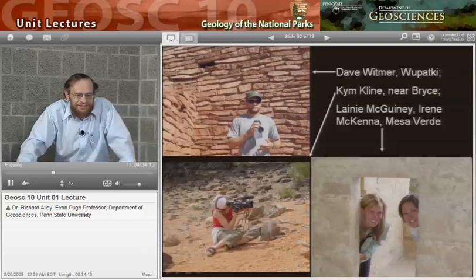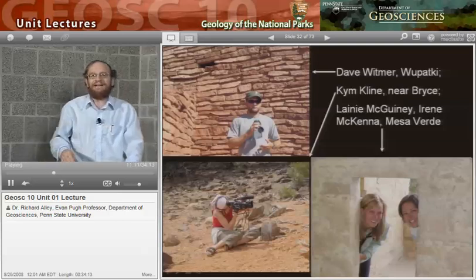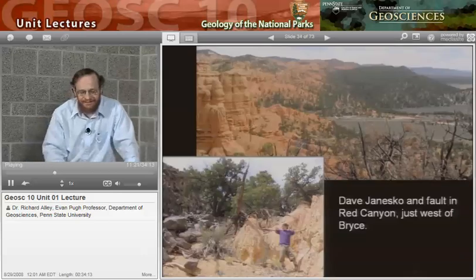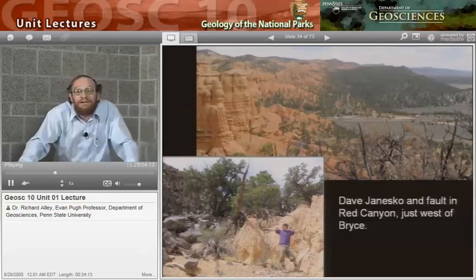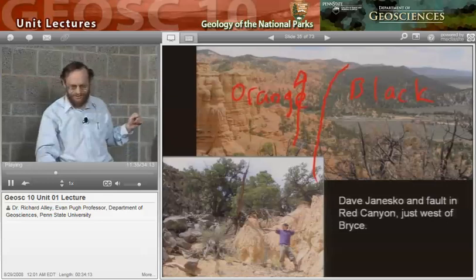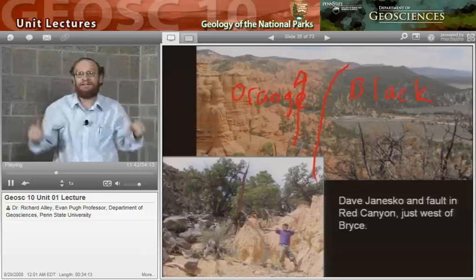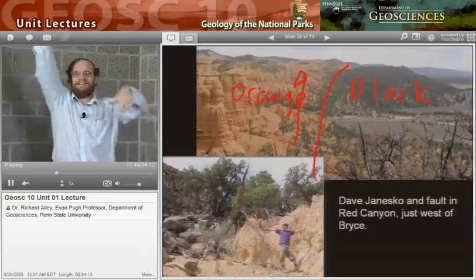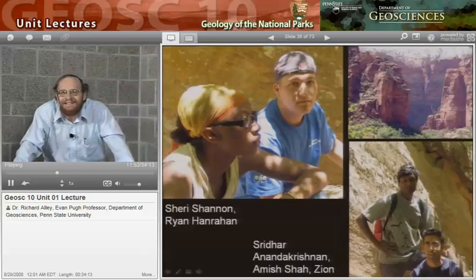Here are Ancestral Puebloan sites — Wupaki up there with Dave Whitmer, and Laney and Irene down in Mesa Verde, and Kim over there filming just outside of Bryce. Here we are looking at a geologic feature. You look at the picture above Dave Genesco and you see that one side is orange and the other side is black. The orange is rocks from a lake; the black is rocks from a volcano. And that line where they meet is a giant earthquake fault. What's a giant earthquake fault doing there? Dave is explaining it to you, and you will get to see this before we're finished.